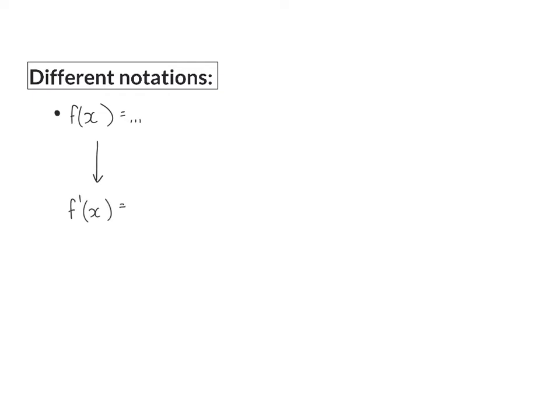The second notation is when you are simply given y is equal to. So, when you differentiate this equation, you will write dy over dx is equal to, and this indicates that you are calculating the derivative of y with respect to x.